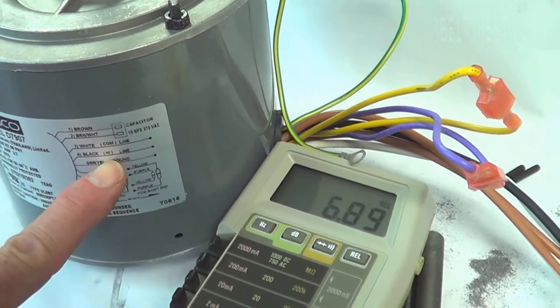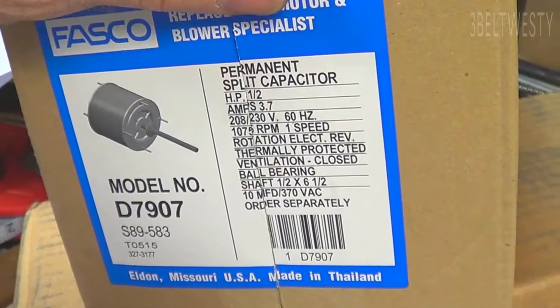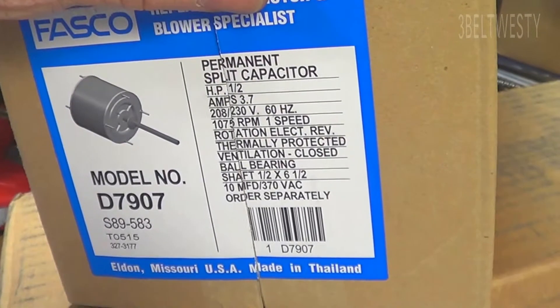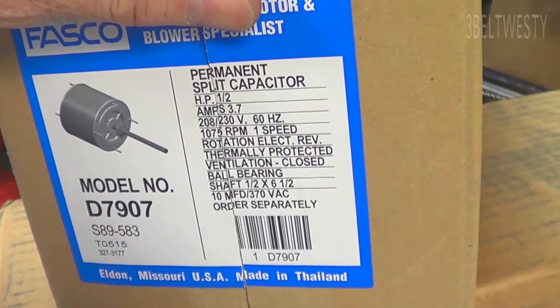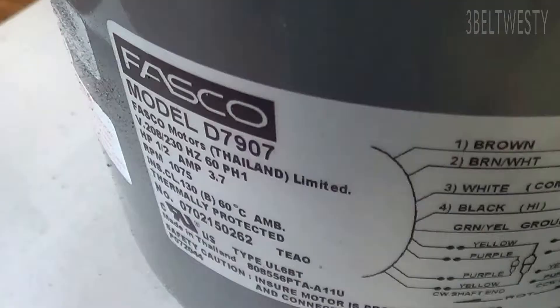The common, the high. I've got about... there it is, half horsepower, 3.7 amps. Rotation, ventilation, closed, ball barrier.